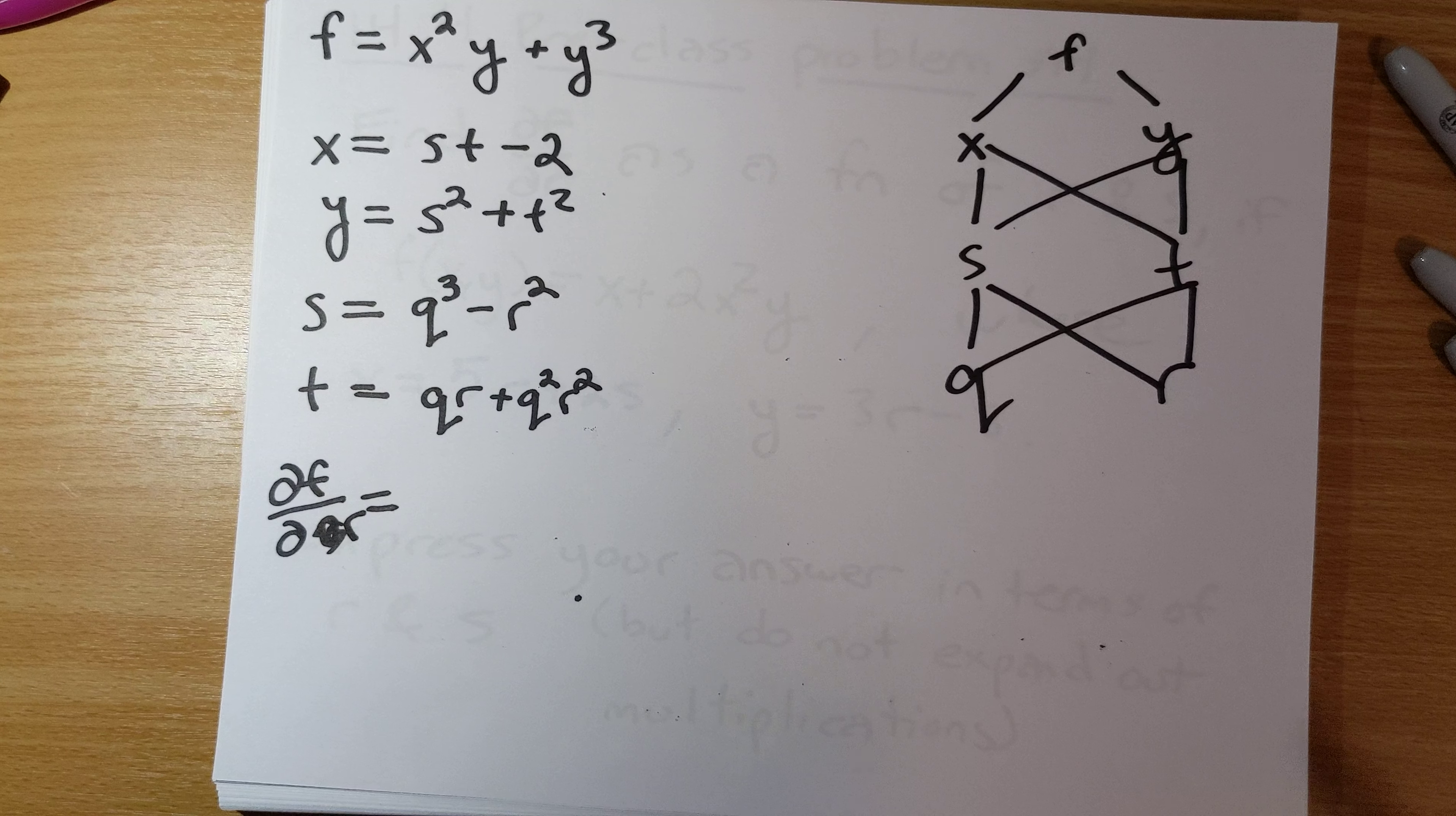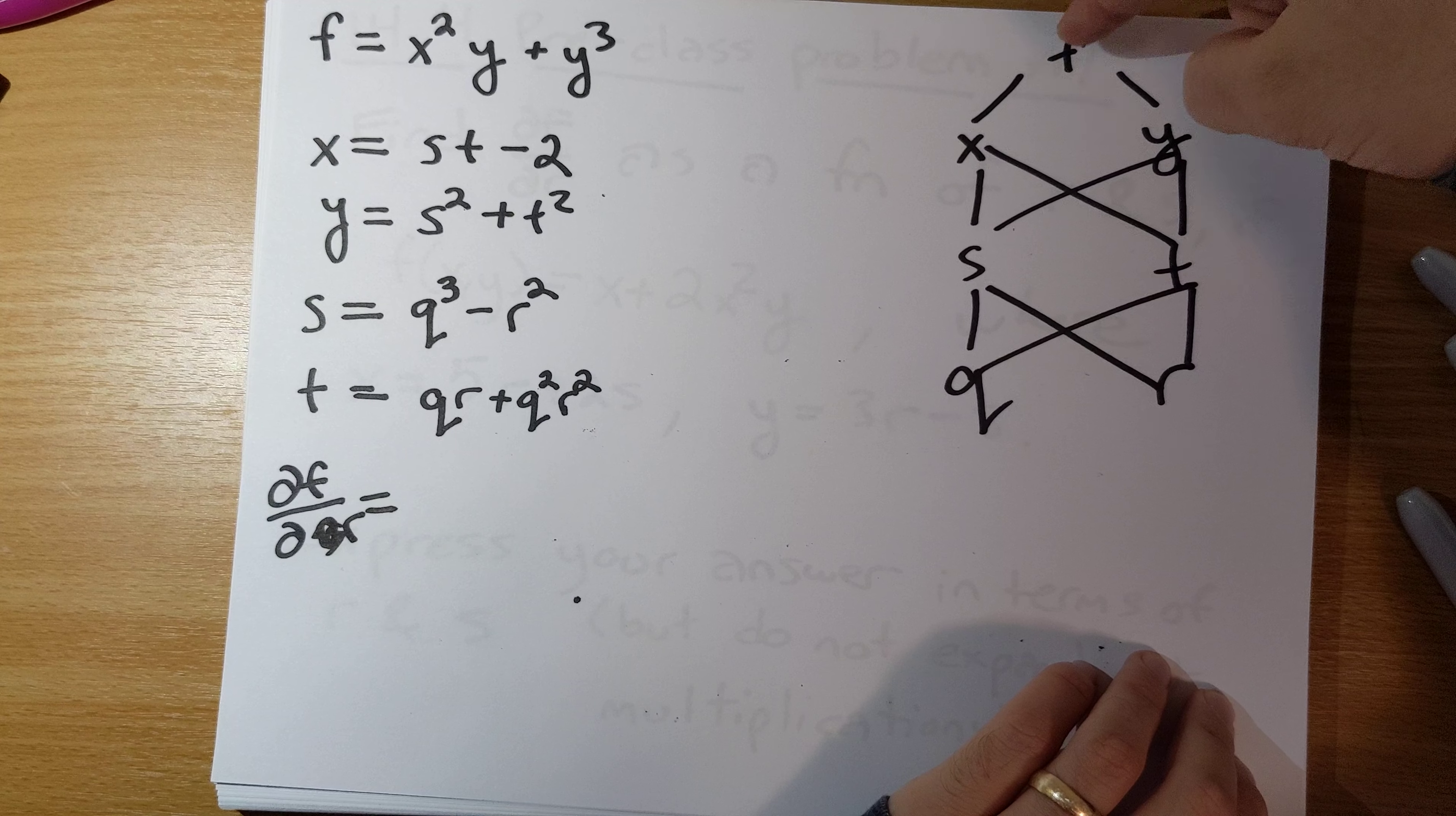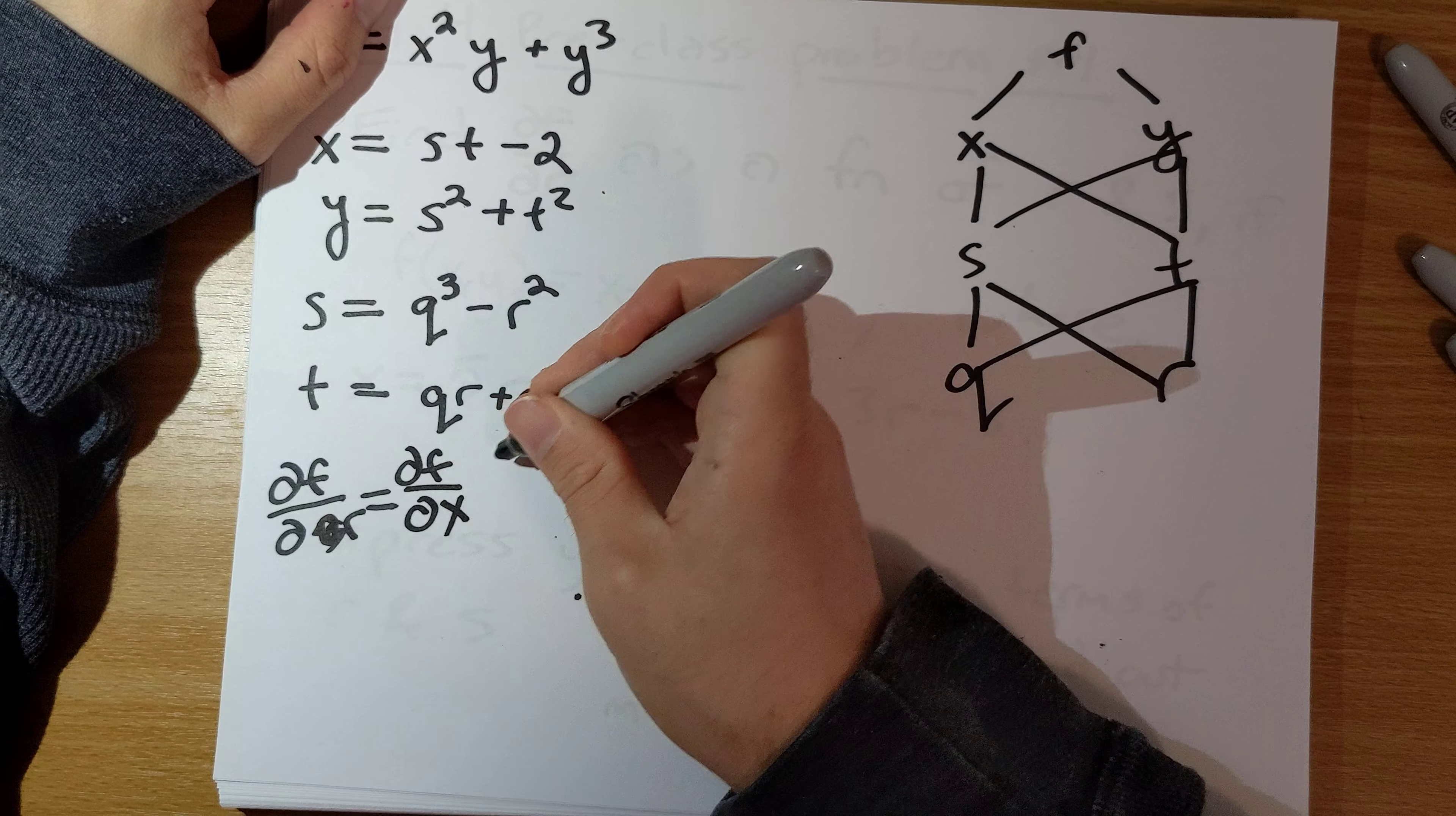How many different paths are there to go from f down to r? So we could go f to x to s to r, so that would be partial f partial x times partial x partial s times partial s partial r.